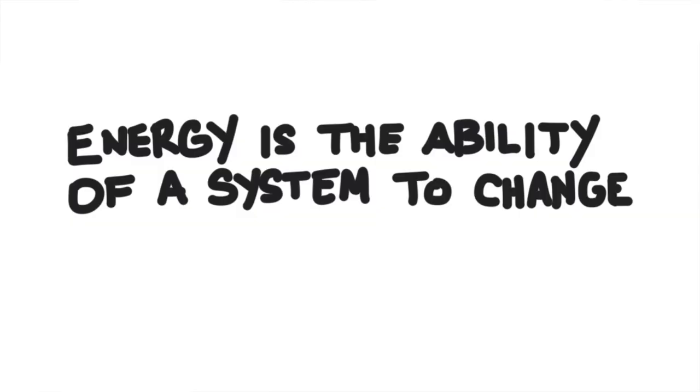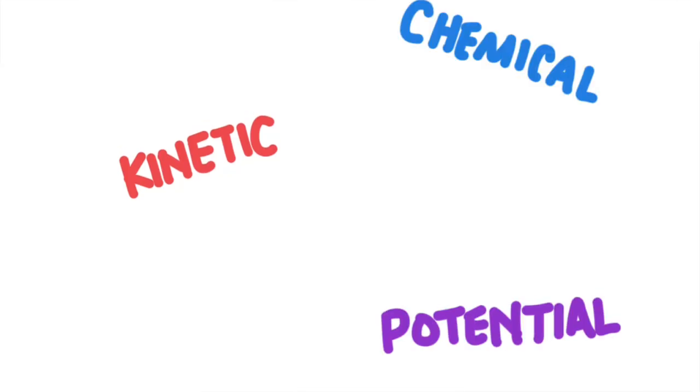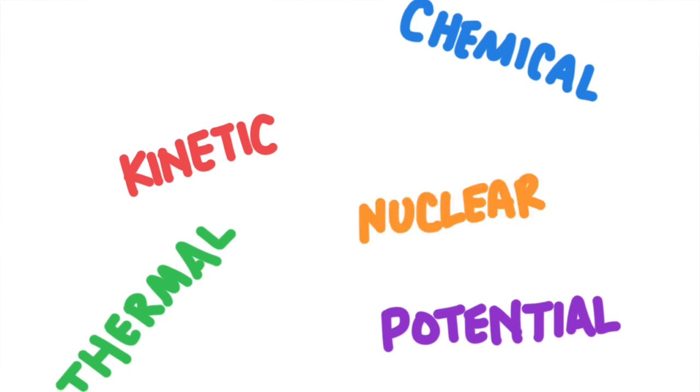Energy is actually pretty difficult to define because there are so many different forms of energy. Traditionally, energy is defined as the ability of a system to change, sometimes as the ability to do work, sometimes as the force that makes something move. Energy is tough to boil down to just a single definition because each form of energy kind of behaves differently. There's kinetic energy, potential energy, chemical energy, thermal energy, and nuclear energy — and it just goes on and on.